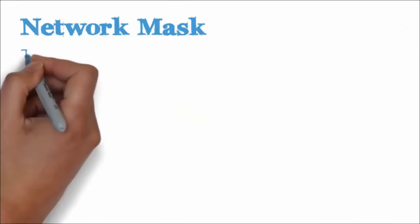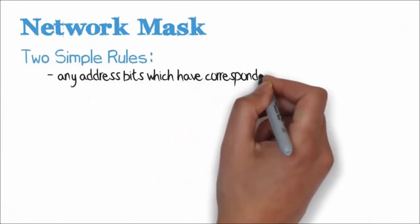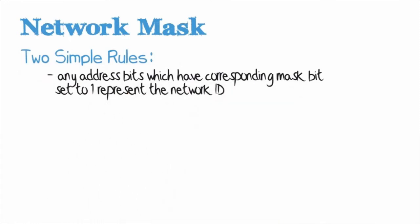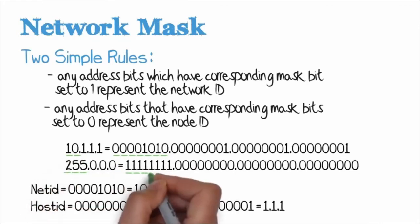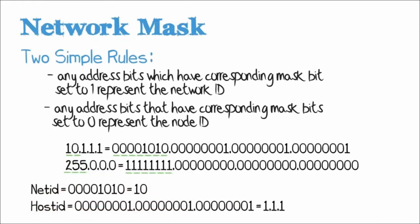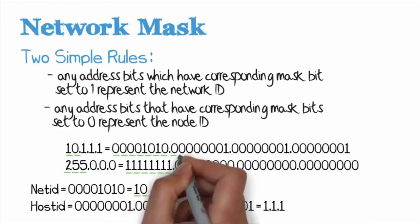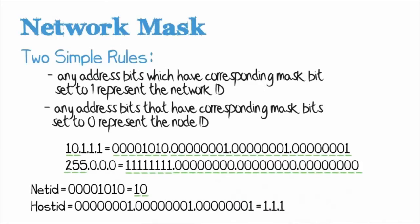When working out the network and host portions of an address, follow these two simple rules: any address bits that have a corresponding mask bit set to 1 in binary represents the network; any address bits that have a corresponding mask bit set to 0 represents the host. So 1 in binary means network, 0 in binary means host. In this example, 10 is the network because there are ones in the mask. The network ID is 10, and the host ID is 1.1.1. So in summary, the network is 10 and the host portion of the address is 1.1.1.